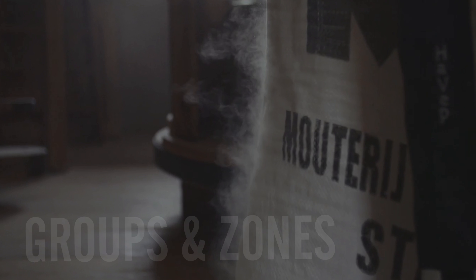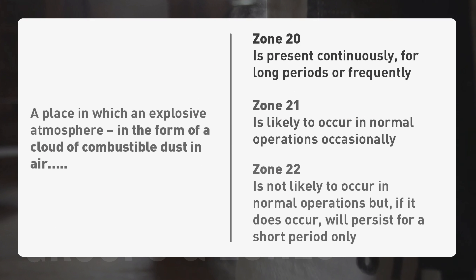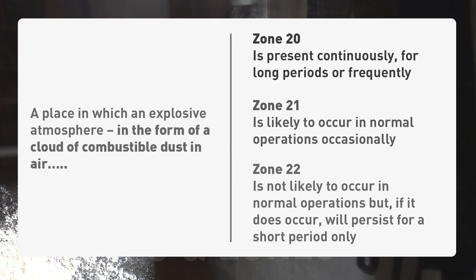If the potential explosive environment is from the risk of a cloud of combustible dust in the air, the class of the ATEX zone would be identified either as zone 20, zone 21, or zone 22. The classification of 20, 21 or 22 would depend upon the considered likelihood that the explosive environment will occur and the frequency of its occurrence. In the case of zone 21, it is considered likely that the explosive environment would occur in normal operation but only occasionally.